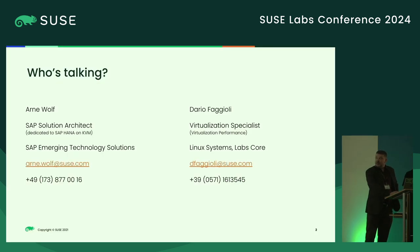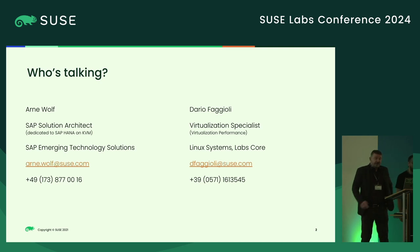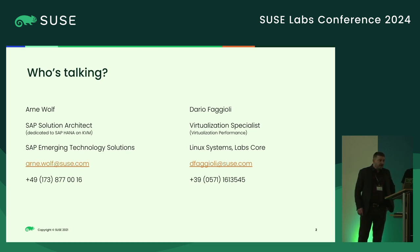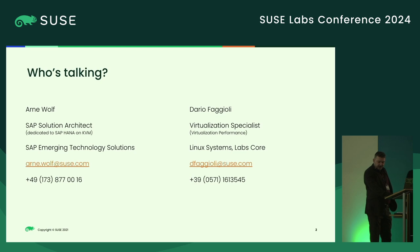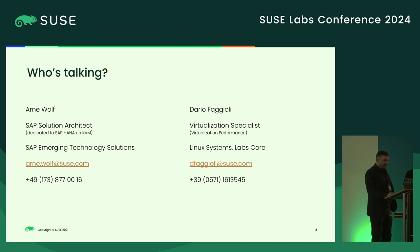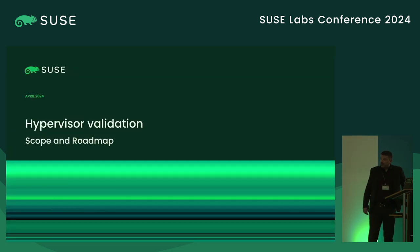The most important stuff first: I am Arne Wolf, this is Dario Fagioli. I am a SAP solution architect in the sub-emerging technologies solutions team, and Dario is a virtualization specialist with focus on virtualization performance in the Linux system labs for our team. My part covers the hypervisor evaluation scope and roadmap.